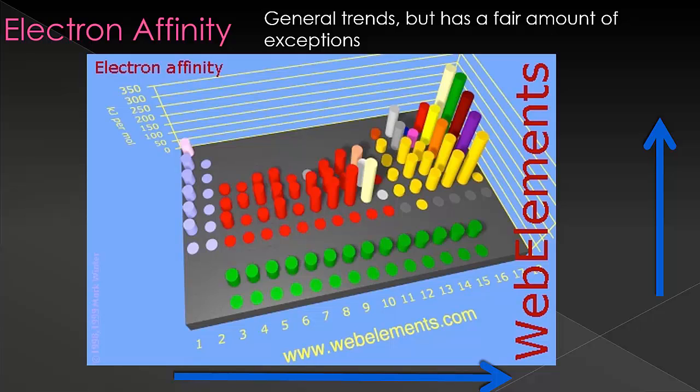Now, I put up a picture that kind of graphically shows this for you. Notice how many exceptions there are. There's quite a few of them, but they're in a pattern. The second column of elements is very, very small. So this is not likely to gain an electron.